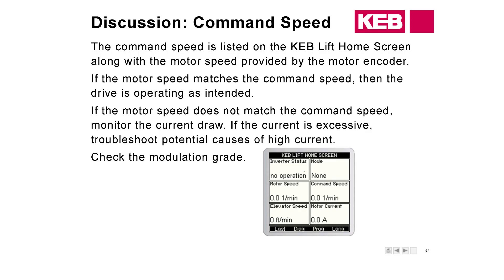A couple of other things we can look at. Number one: command speed. Are we actually getting a speed from the controller? Sometimes you go to run and you're not going to move, and in this case we're not drawing any current either — we don't have a command speed. On the home screen you'll be able to tell; command speed would just remain at zero.